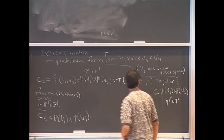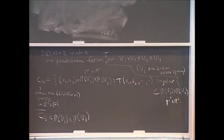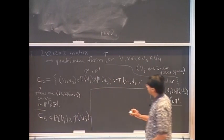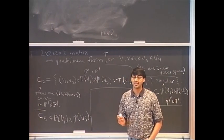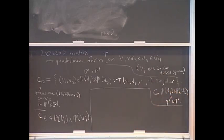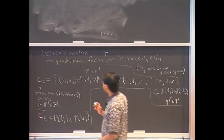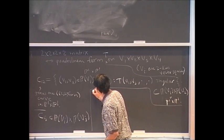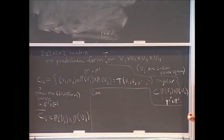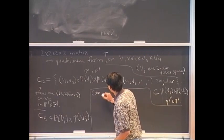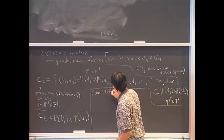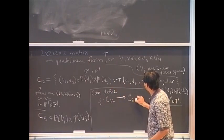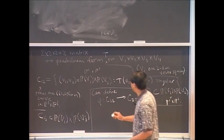The natural question arises: are these isomorphic curves, and are they isomorphic embeddings into P1 cross P1? It turns out they're not isomorphic embeddings into P1 cross P1, but they are isomorphic curves. Here's a way to see that C12 and C23 are isomorphic. One can define a map phi from C12 to C23 as follows.